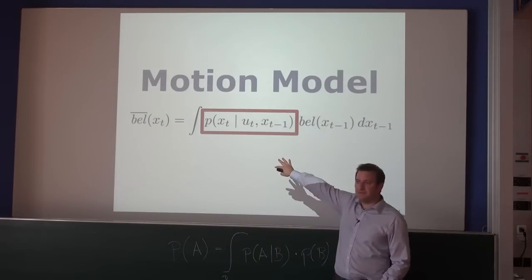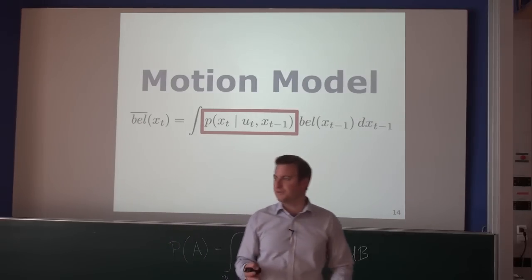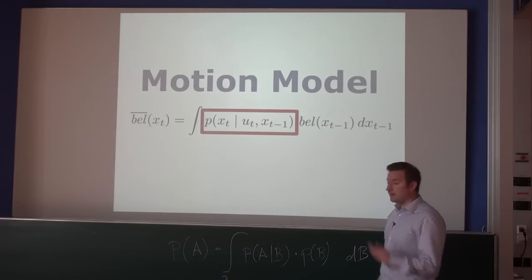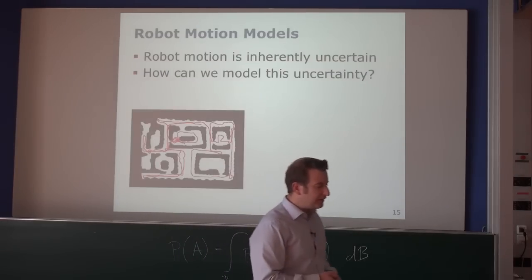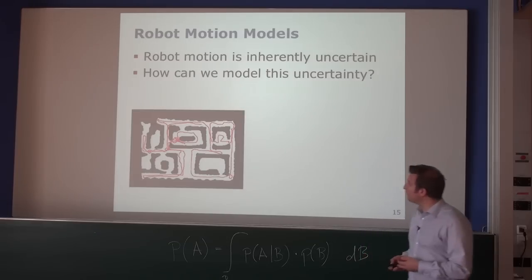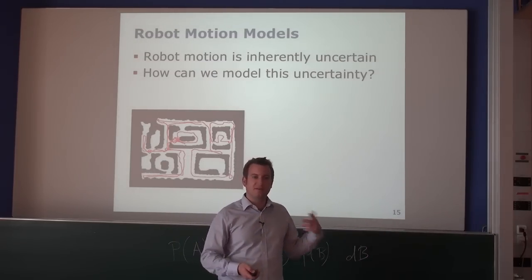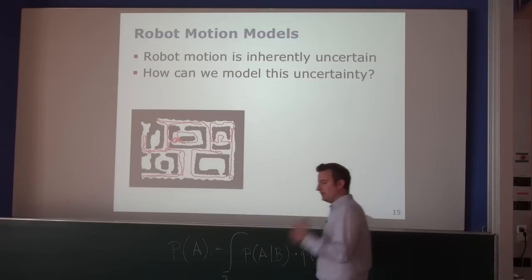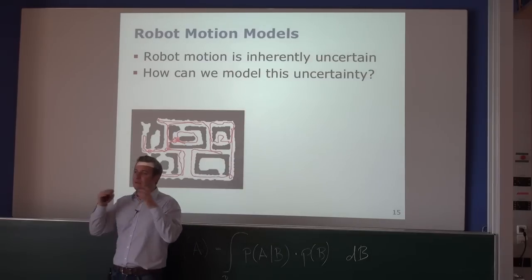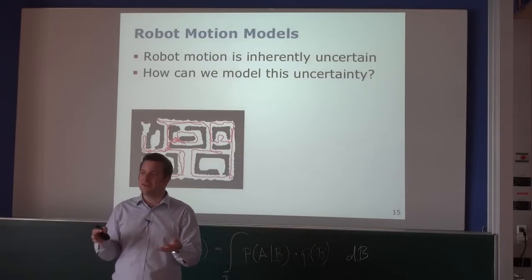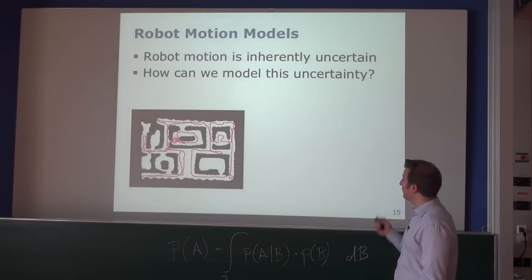Let's look into the motion model. How do I estimate the current state of the system if I know the previous one and the command executed? Robot motion is inherently uncertain because the robot makes mistakes. If I tell my robot to go one meter forward, it gives power to the motors and stops after a certain number of wheel rotations — but it quite likely ends up at 98 centimeters or 1.02 meters rather than exactly one meter. The question is: how can we model this motion?